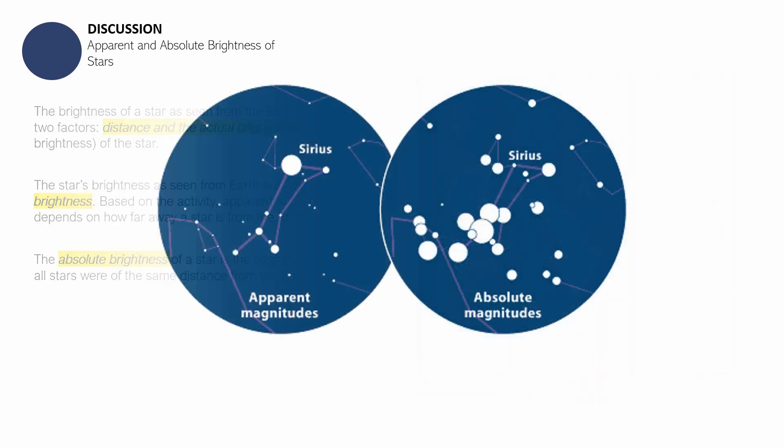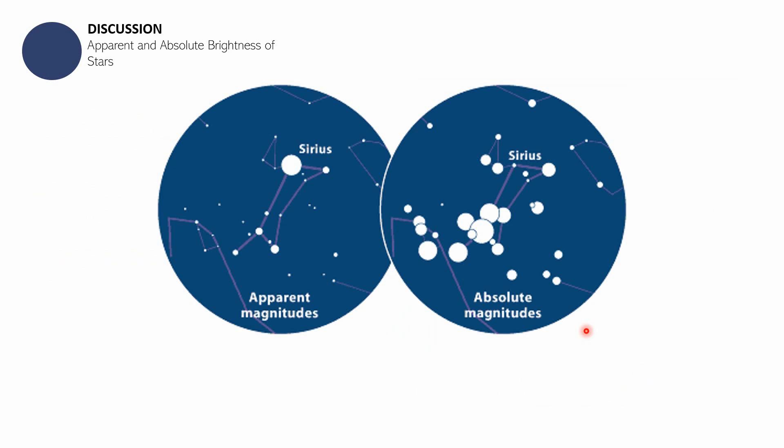In this example, Sirius appears to be a very bright star in the night sky compared to these other stars. When in fact, the absolute magnitudes or absolute brightness of all these other stars are actually a lot compared to Sirius.